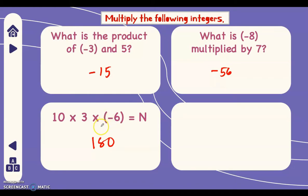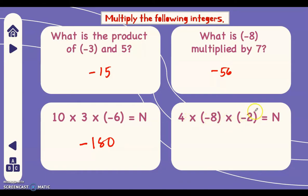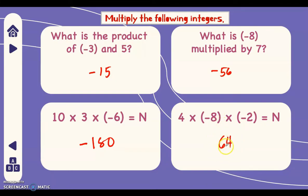Next, 4 times negative 8 times negative 8 times negative 2 equals n. We multiply one by one: 4 times 8 is 32, 32 times 2 is 64. How about the sign? Let's count the negative integers — we have 1, 2 — that's an even number of negative integers. Therefore the sign of our answer is positive, so we have positive 64.